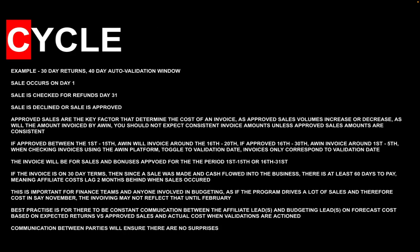For example: a brand has a 30-day return window and a 40-day auto-validation period. A sale occurs on day one, is checked for refunds on day 31, and then approved. Approved sales are the key factor determining invoice cost — as approved sales volume increases or decreases, so will the amount invoiced by Awin. You should not expect consistent invoice amounts unless the sales volumes being approved are also consistent. Sales approved between the 1st and 15th — Awin will invoice around the 16th to 20th; approved between the 16th and 30th — Awin will invoice around the 1st to 5th.